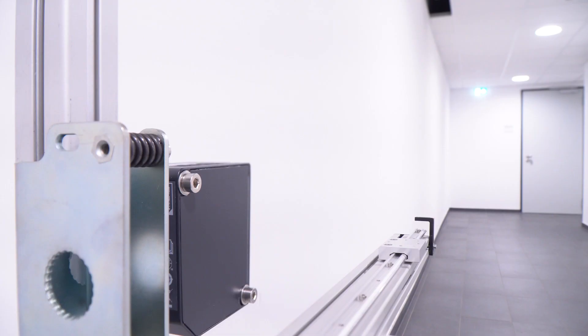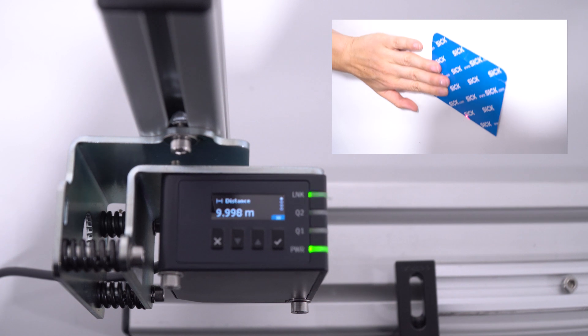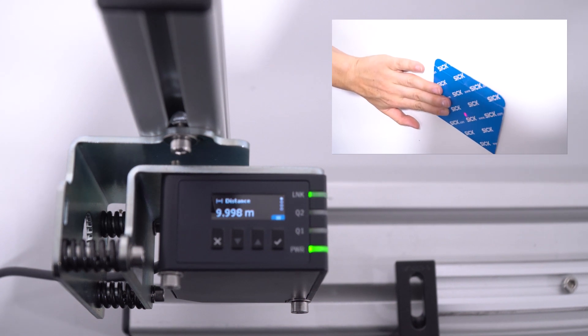In this scenario, we are pointing at the white target, positioned at a distance of 10 meters. As I place the carton in front of the wall, the distance value decreases by its thickness of 2 mm.